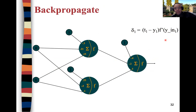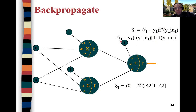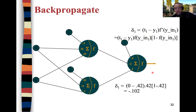The derivative of the sigmoid is given by the sigmoid itself multiplied by one minus the sigmoid, evaluated at the net activation at the output. Using this formula: the target was zero, but we got 0.42, so we compute 0.42 × (1 − 0.42). This gives us the delta value of −0.12, which we're going to backpropagate to the hidden nodes.